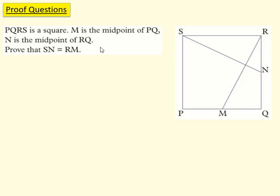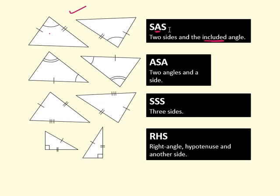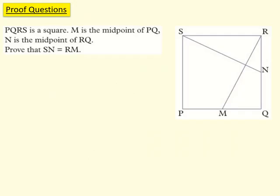In this video we're going to look at how to use congruence to prove certain facts about particular shapes. We're going to be using the four main ones we discussed last time: side-angle-side, angle-side-angle, side-side-side, and right-angle-hypotenuse-side. We're going to use those in a couple of examples, and I'm going to tell you how to structure a proof or an argument.